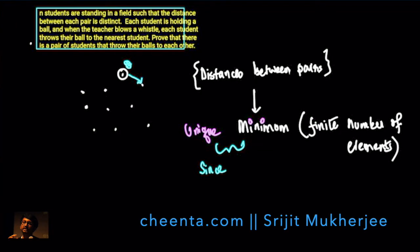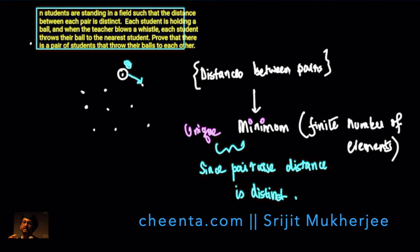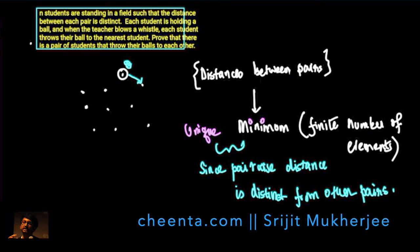Since the pairwise distance is unique and distinct from other pairs, let's take the pair that has the shortest distance. So this pair — call them student A and student B — has the shortest distance.